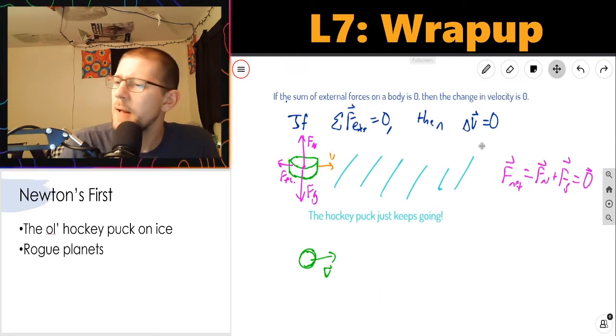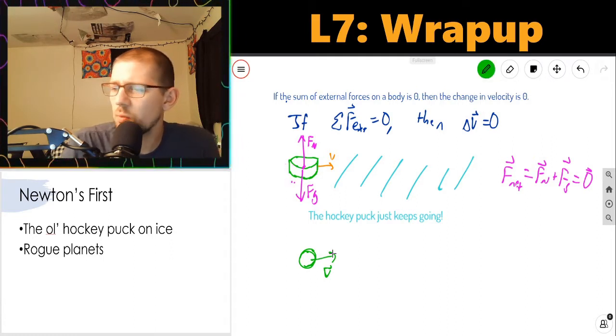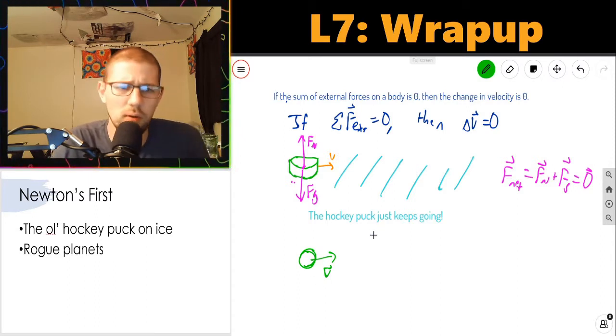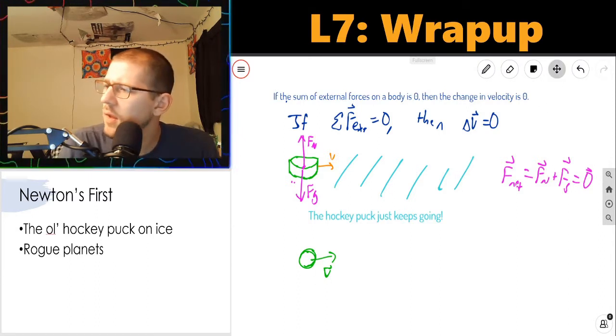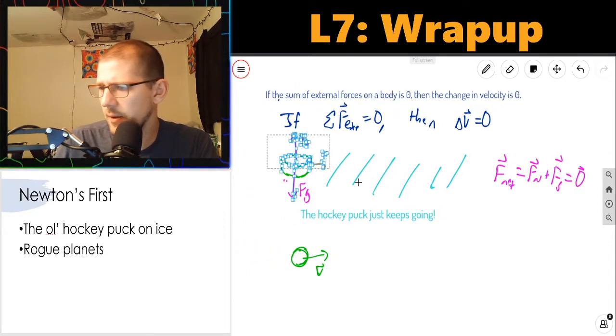Those are my two archetypes for Newton's first law. Places where the sum of external forces is zero, like the hockey puck sans friction, and places where there just are no forces, so the sum of net forces is trivially zero.